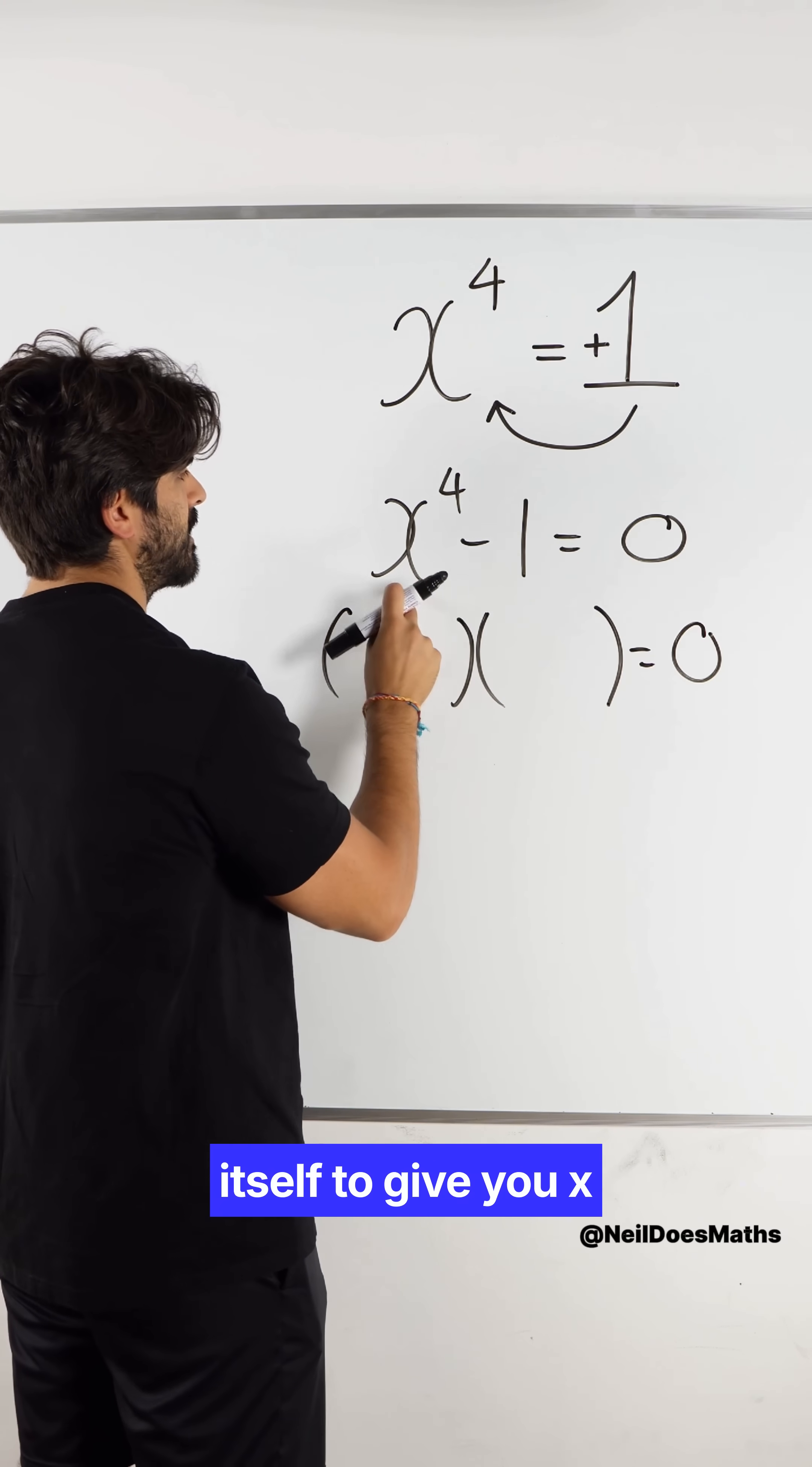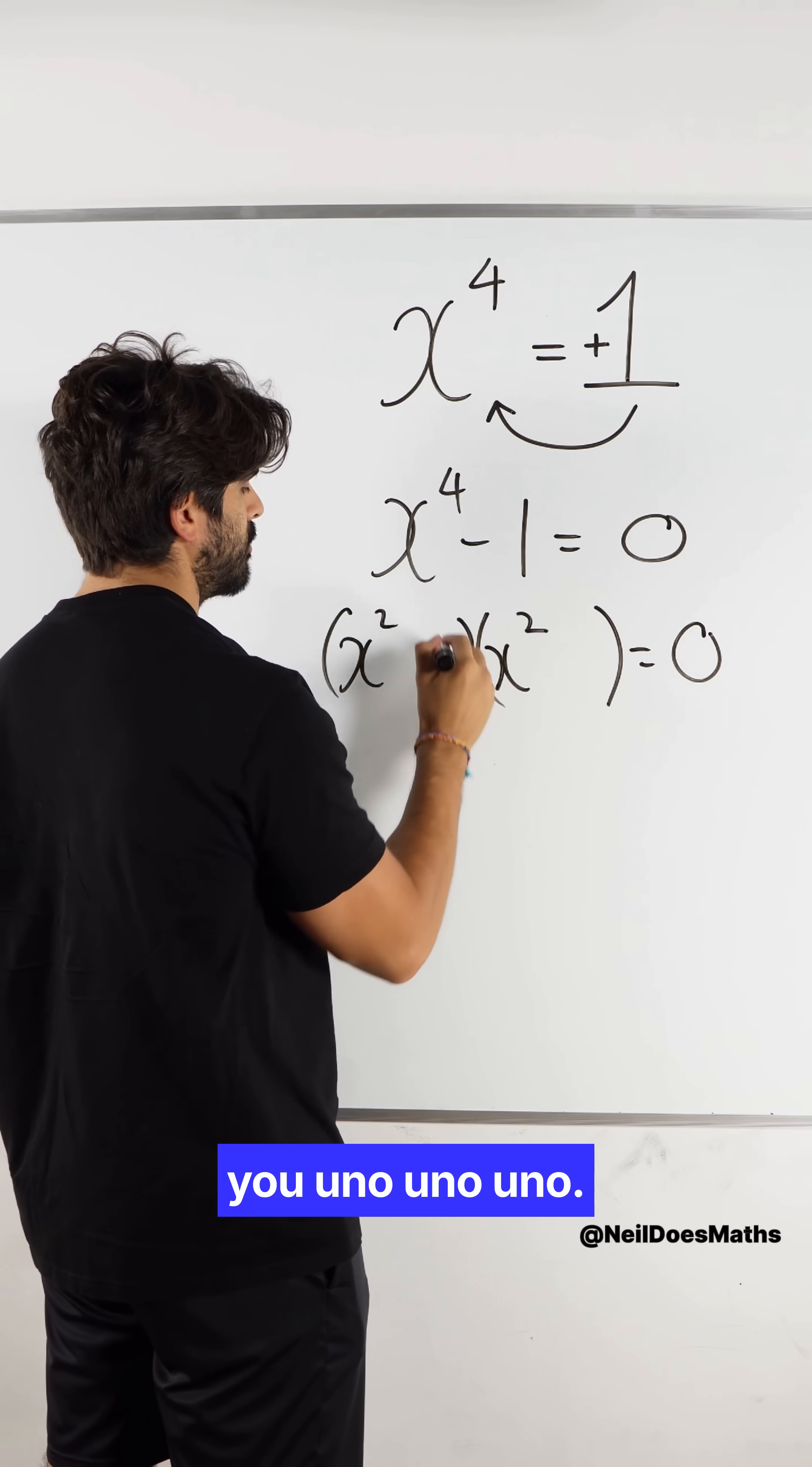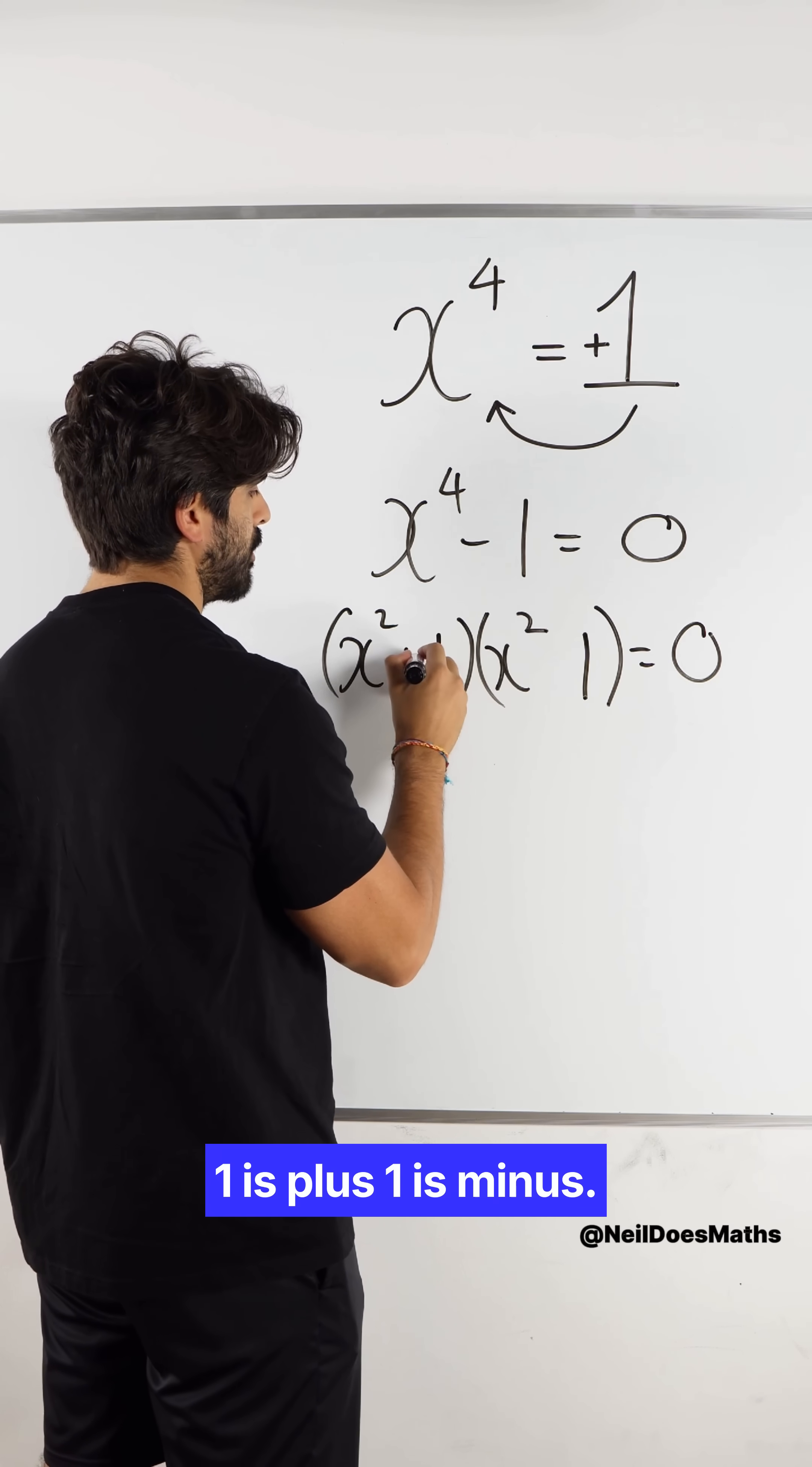What multiplies by itself to give you x to the power of four is x squared. What multiplies by itself to give you one? One. One is plus, one is minus.